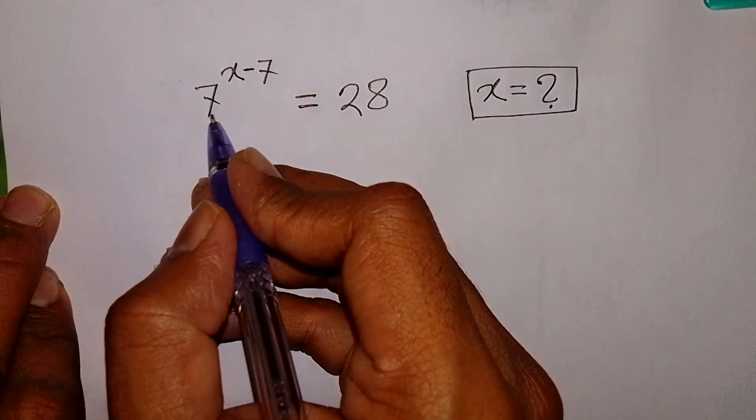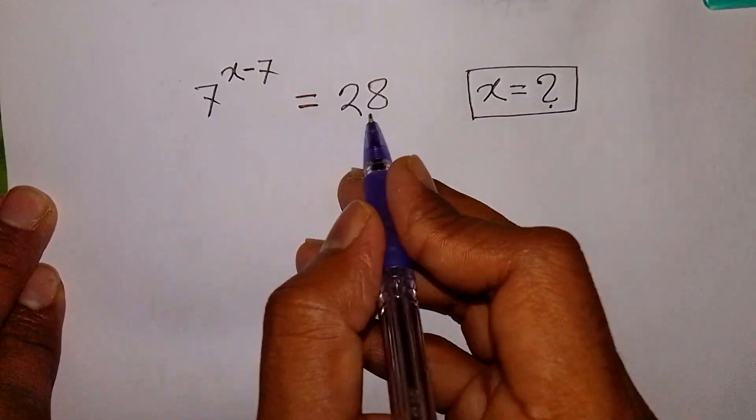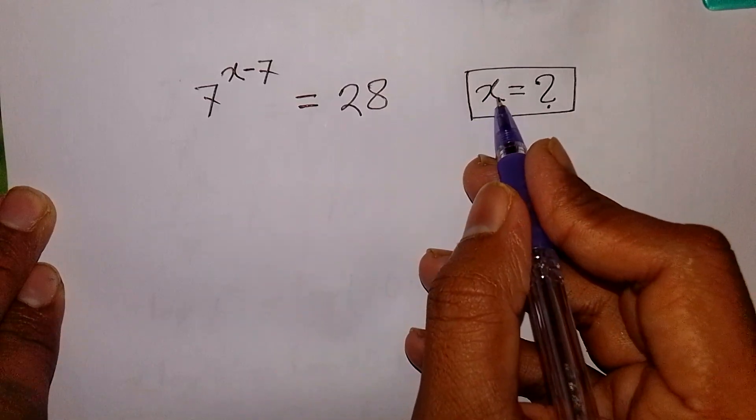How to solve 7 power of x minus 7 is equal to 28. What is the value of x?